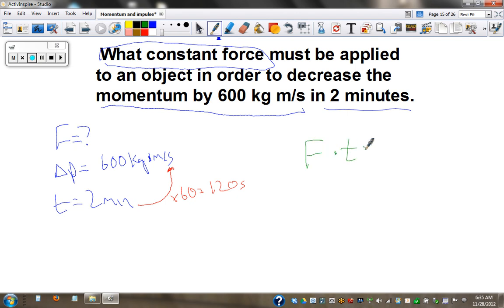Force times time equals change in momentum. Force times 120 equals 600. Divide by 120. Force equals 5 newtons.